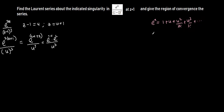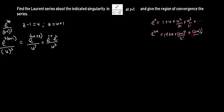The Maclaurin series for exponential u is 1 plus u plus u squared over 2 factorial, continuing to infinity. So if we have exponential 2u, it is going to be 1 plus 2u plus (2u) squared over 2 factorial plus (2u) cubed over 3 factorial, continuing to infinity.